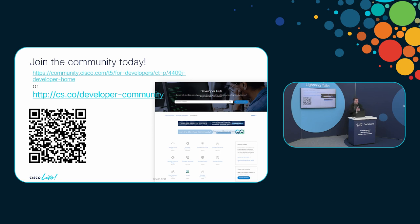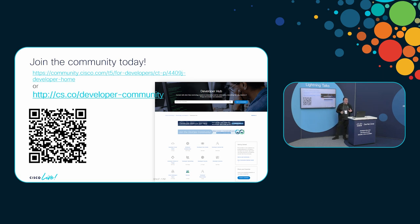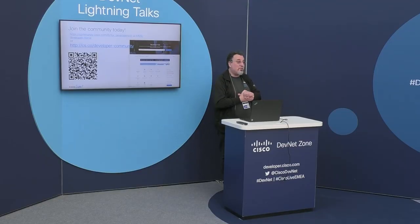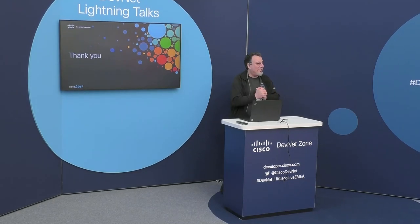So I encourage you to join our community today. Go to community.cisco.com and you'll see the developer hub. We also have a shorter URL: cs.co/developer-community. That will get you there directly, as will the QR code. If you go to developer.cisco.com and look at any of the technologies, there are links to the community. I really look forward to seeing you there and interacting with you. That's what I have for you today. Thank you.